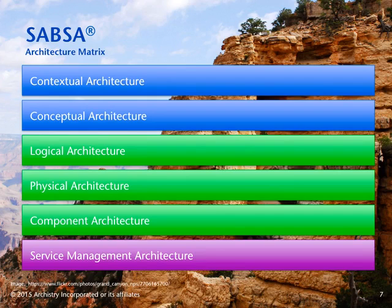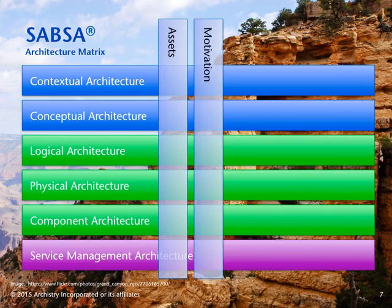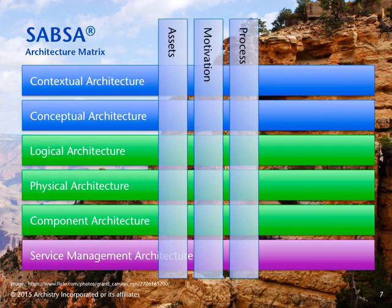SABSA further provides a set of perspectives that act as lenses to focus the analysis at each layer of the architecture. The first perspective is the assets perspective, or 'what' column — it defines what assets are at risk at each layer of the architecture. The second column is the motivation, or 'why' column, used to identify the risk motivations and define specific policy components at each layer. The third column is the process, or 'how' column, used to catalog and decompose the end-to-end processes of the organization at each layer, so that assurance in meeting the security requirements of any given process are traceably met at each layer of the architecture.